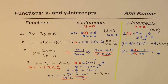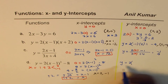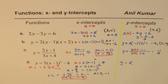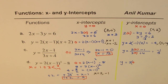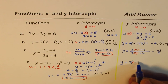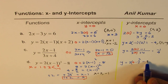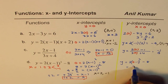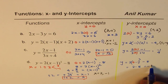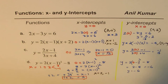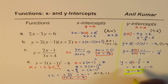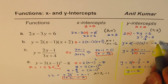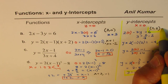To find the y-intercept, substitute x equals 0. So y equals 2 times (0 minus 1) squared minus 8, which equals 2 times 1 minus 8, giving minus 6. So y equals minus 6 is the y-intercept. These are our answers for this set of questions.